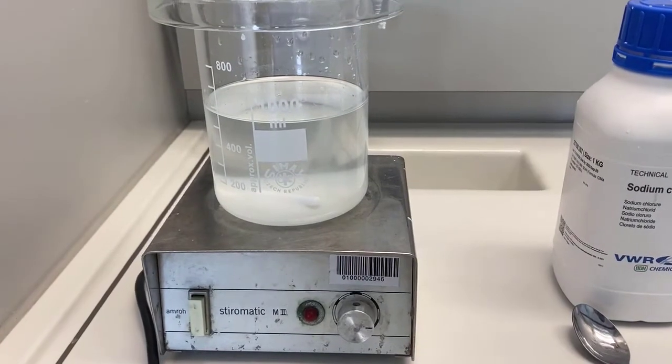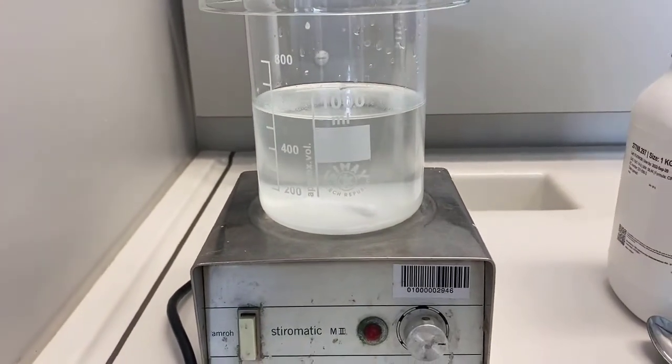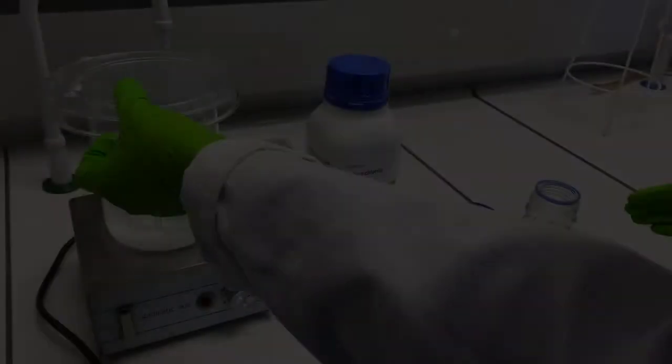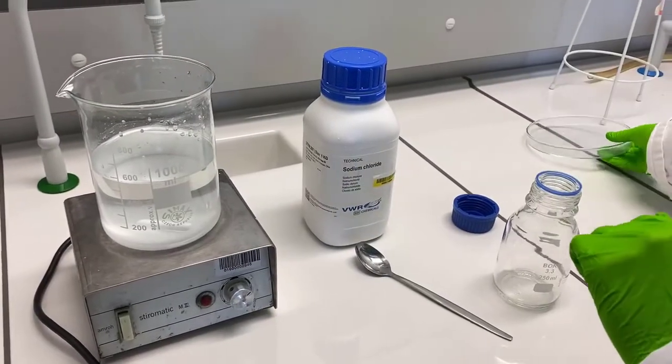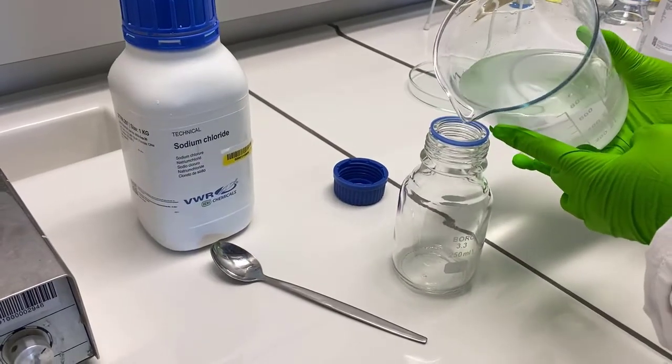Once the solution is saturated with sodium chloride, stop adding further salt and leave the solution overnight at room temperature. The next day decant the supernatant in a new container leaving behind any salt at the bottom.